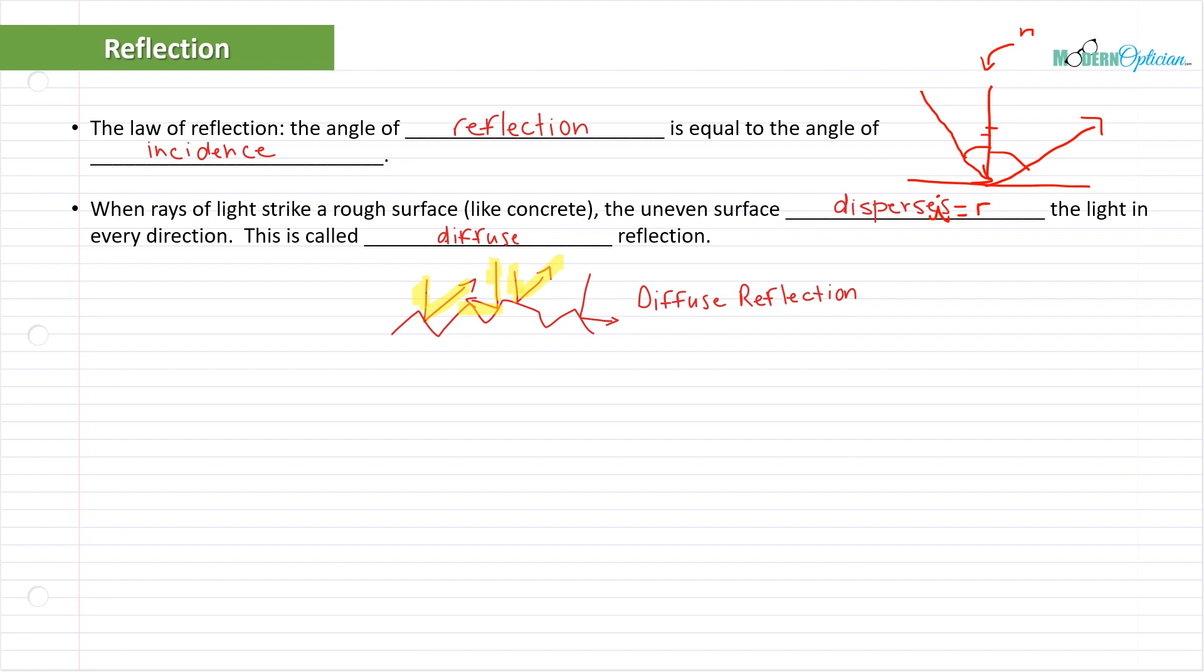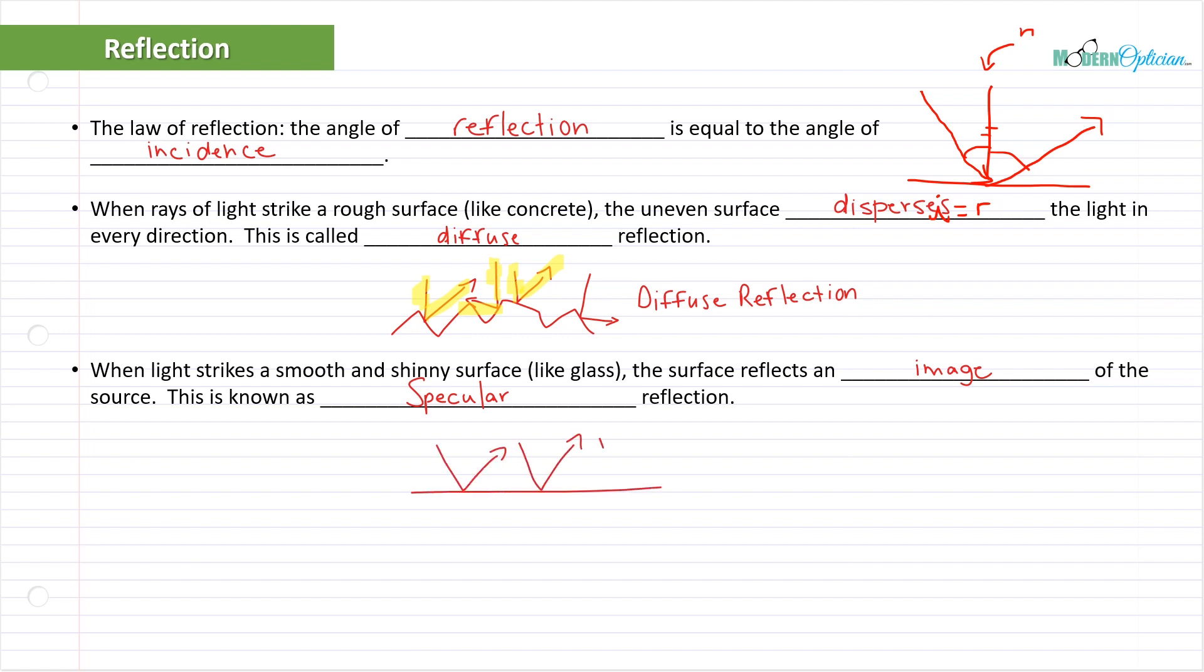Objects scatter light all over the place depending on their shape and structure. When you're looking at your environment, you're getting shadowing and glare because different surfaces reflect light differently. On the other hand, when light strikes a smooth and shiny surface like glass or a mirror, the surface reflects an image of the source. This is known as specular reflection. Nice flat surface, everything bounces the same way. You don't get diffuse light, scattering, and dispersion. You get a perfect mirror image. This is the difference between regular objects and reflective objects like mirrors and glass.